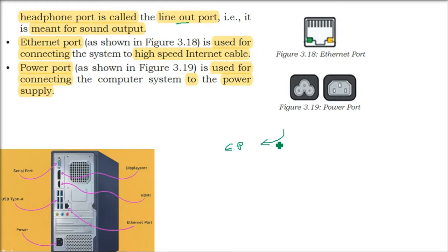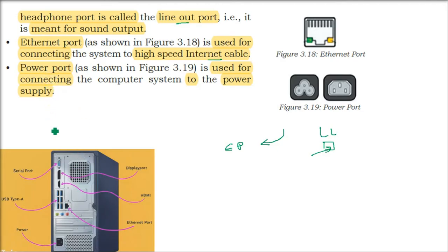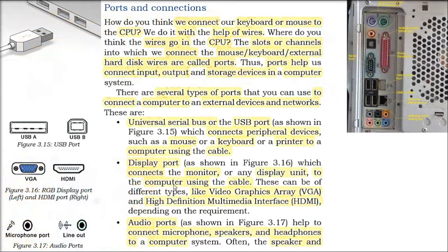The Ethernet port is similar to what was used for landline phones — there is a jack that connects through the Ethernet port. Today it is used for high-speed internet cable. The power port is for power supply, since everything needs power to run.